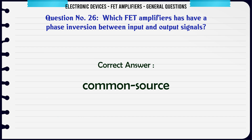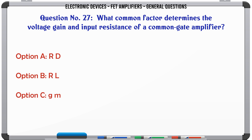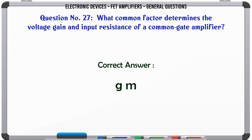What common factor determines the voltage gain and input resistance of a common gate amplifier? A. RD. B. RL. C. GM. D. (no option). The correct answer is GM.